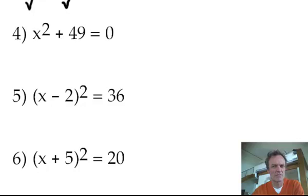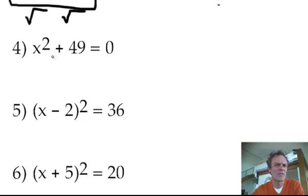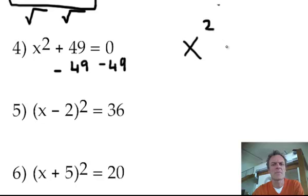So I'll leave it up there. Because again, very similar to question 2, but this time I'll be taking away a 49 from both sides. Take away 49. So x squared equals negative 49.